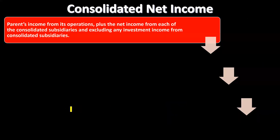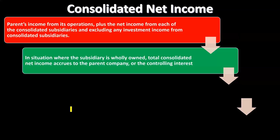Consolidated net income equals the parent's income from its own operations plus the net income from each of the consolidated subsidiaries, excluding any investment income from those consolidated subsidiaries. In other words, we combine the full net income — 100% of the parent's net income from operations plus net income from each subsidiary — and then exclude investment income from consolidated subsidiaries, similar to the elimination entry.